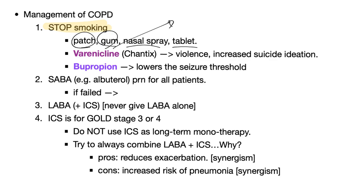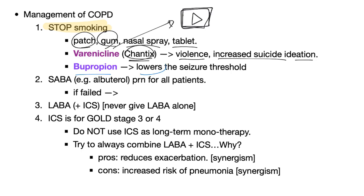There is a drug called varenicline, trade name Chantix. There's a video about it linked in the description — just for you to laugh and remember the side effects: violence, increased suicidal ideation, and others. You can try bupropion, but be careful — it lowers the seizure threshold, making the patient more vulnerable to seizures.